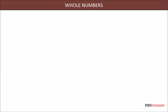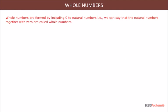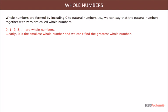Whole numbers are formed by including zero to natural numbers. The natural numbers together with zero are called whole numbers: 0, 1, 2, 3, and so on. Clearly, zero is the smallest whole number, and we cannot find the greatest whole number. Next we look at the predecessor and successor of a whole number.